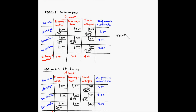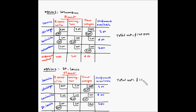Based on these allocations, the total transportation cost for option 1 comes to $120,000, and for option 2 the total cost comes to $140,000. Definitely, the total cost for option number 1 is lower than option number 2.